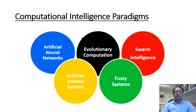There are different paradigms of computational intelligence which include artificial neural networks, evolutionary computation, swarm intelligence, artificial immune systems, and fuzzy systems. I will discuss these concepts one by one.